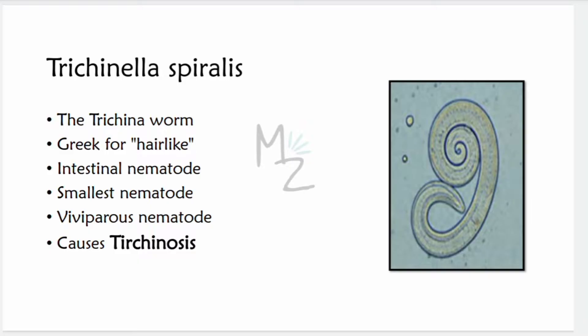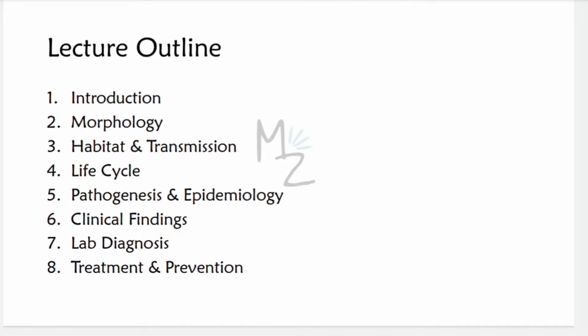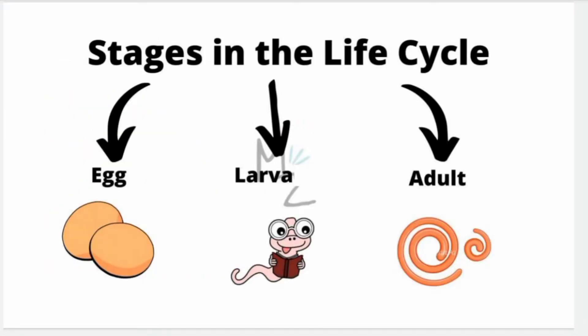In the picture on the right side you can see Trichinella spiralis — it looks like a spiral. The lecture outline covers: morphology, habitat and transmission, life cycle, pathogenesis and epidemiology, clinical findings, lab diagnosis, treatment, and finally prevention.